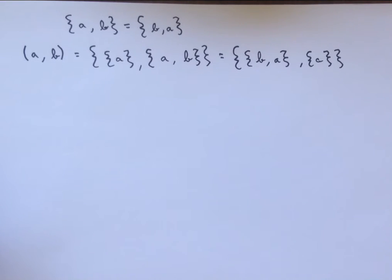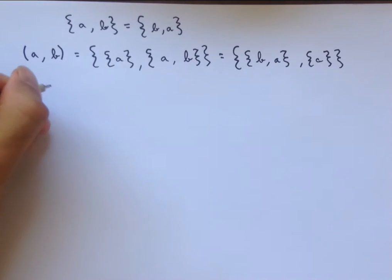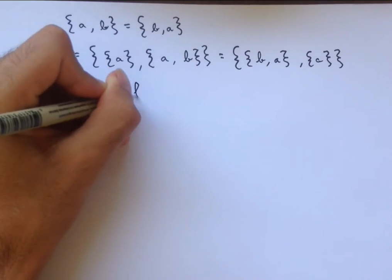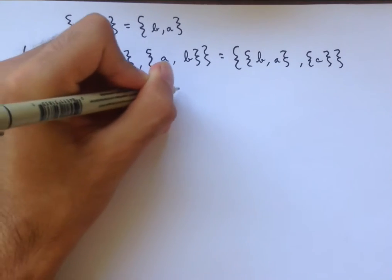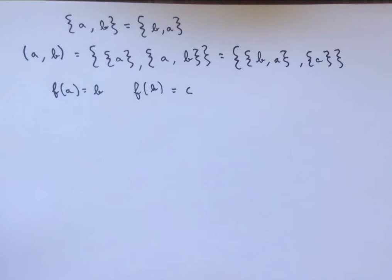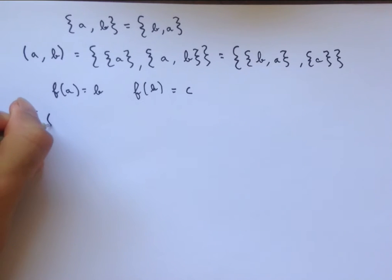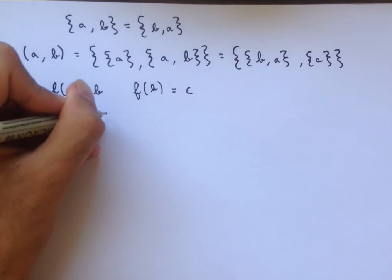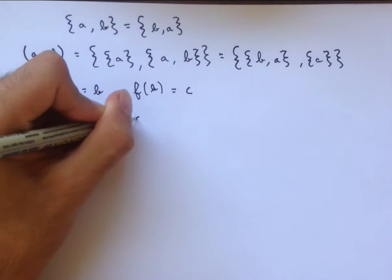And so using ordered pairs, we can now represent functions. So consider the function defined by F of A is equal to B, and F of B is equal to C. The way that we can represent this function as a set is to represent it as a set of ordered pairs. So we represent it as a set of ordered pairs A, B, and B, C.